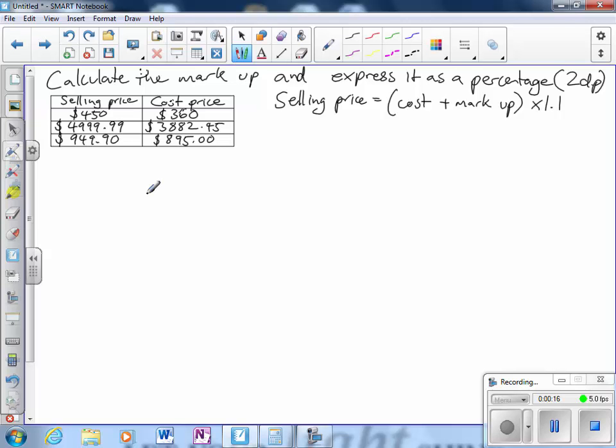I've got a table here with some selling prices and cost prices and I know that the selling price is equal to the cost plus the markup multiplied by 1.1. So what I need to do is fill in the gaps with this formula.